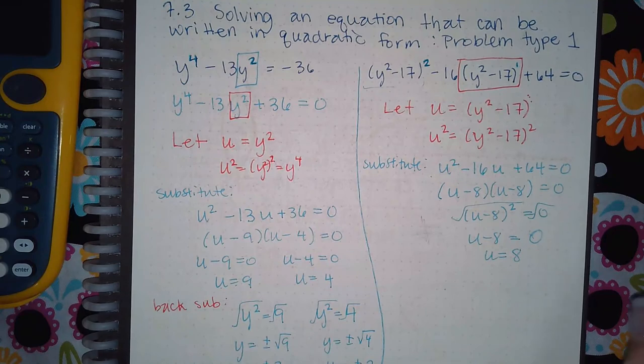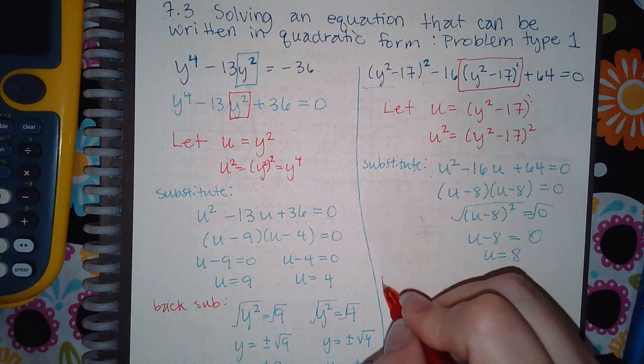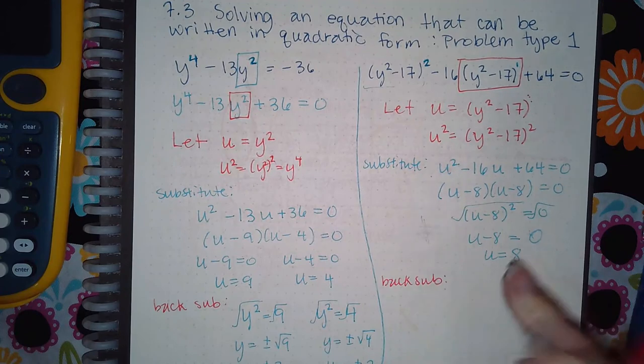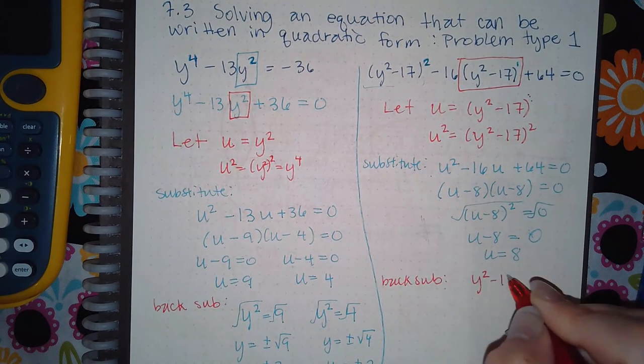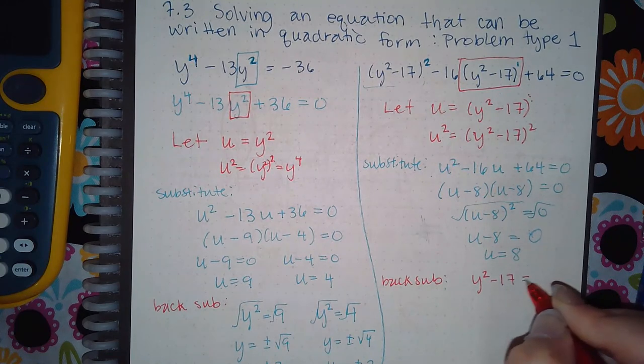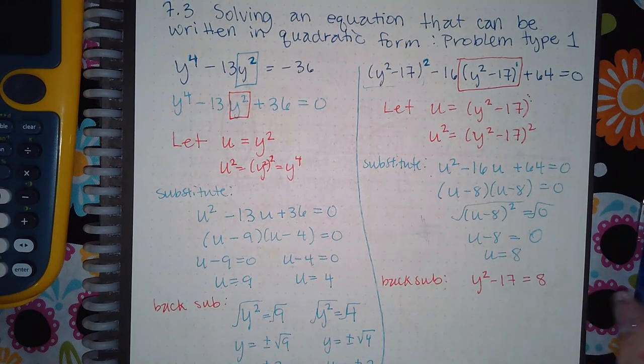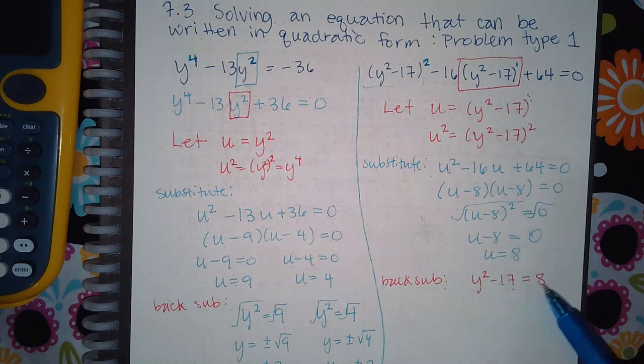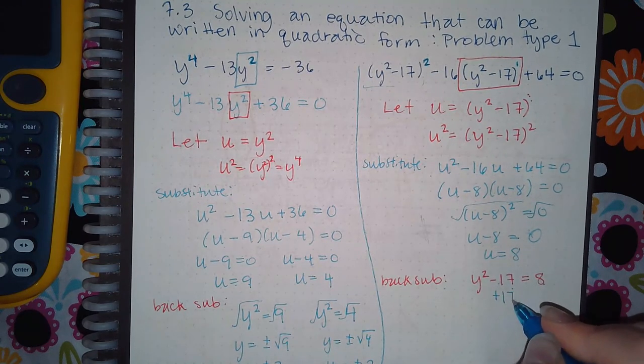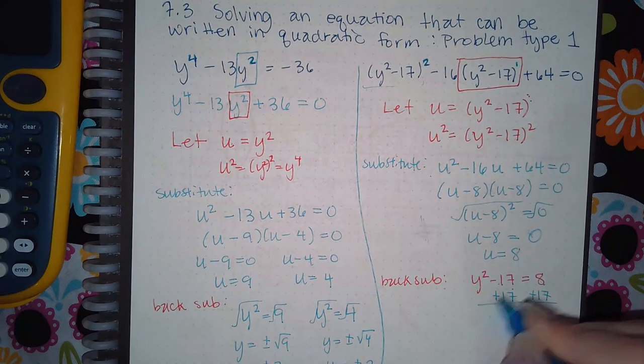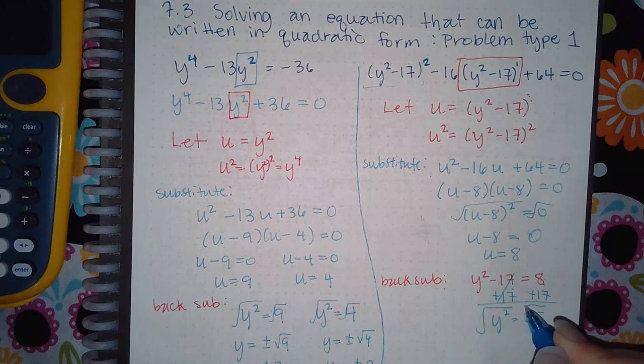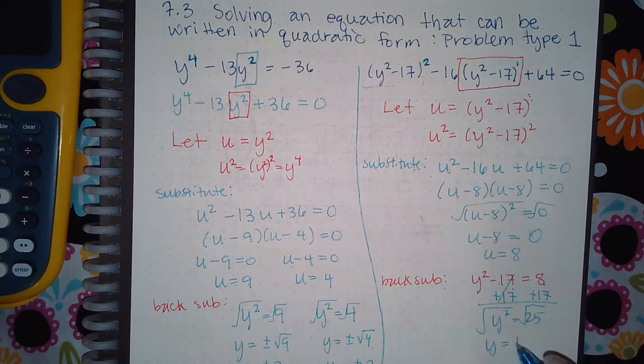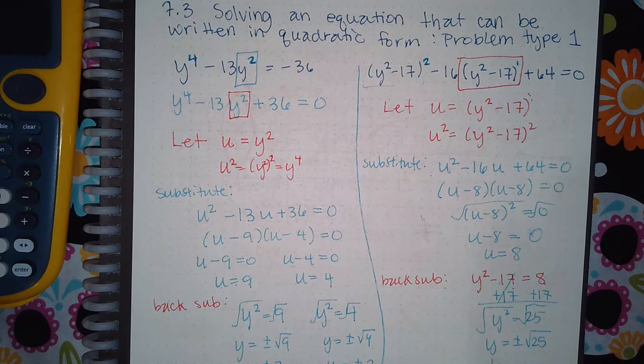But the problem didn't ask you to solve for u. So you do have to back sub. What did u represent? U represented y squared minus 17. So really the problem we're trying to solve is y squared minus 17 equal to 8. And so then here I'm going to add 17 to both sides. That's going to give me 25. And then I can take the square root of both sides. I get y equals plus or minus the square root of 25. Or y equals plus or minus 5.